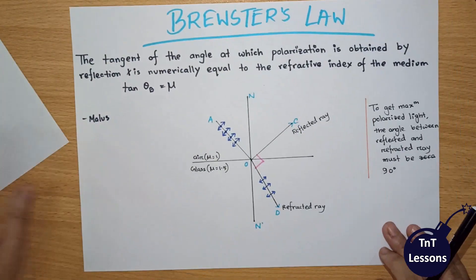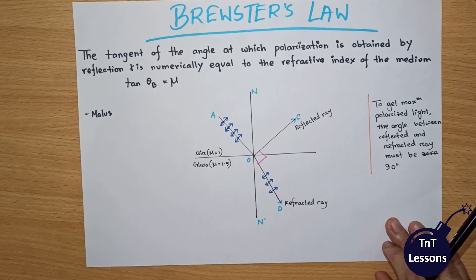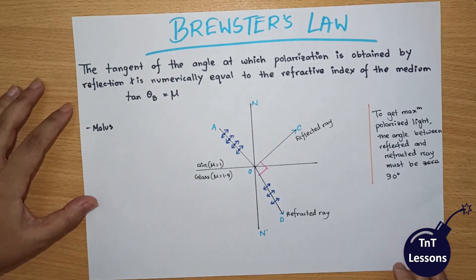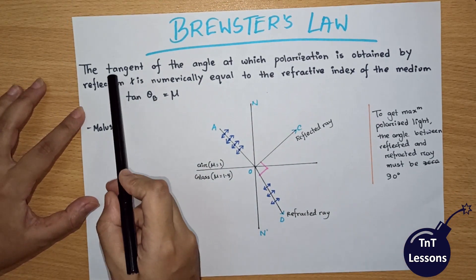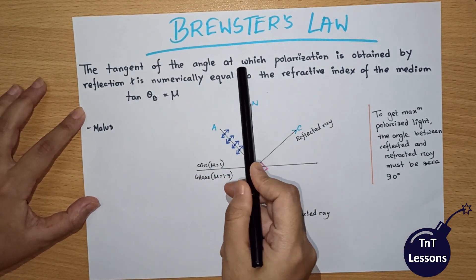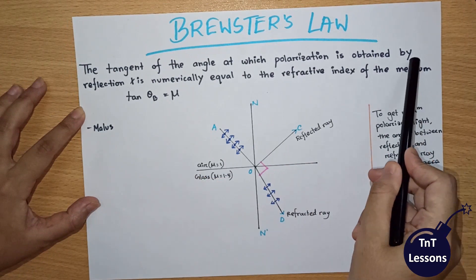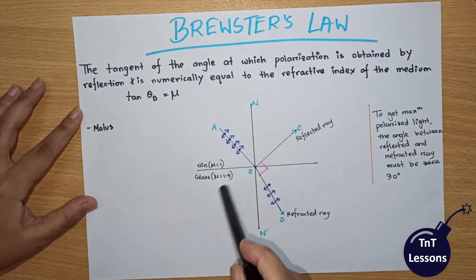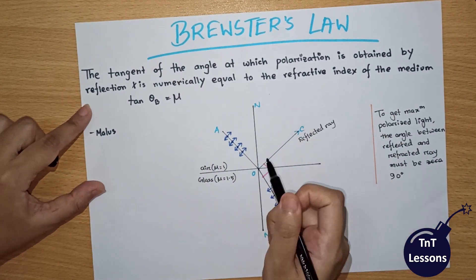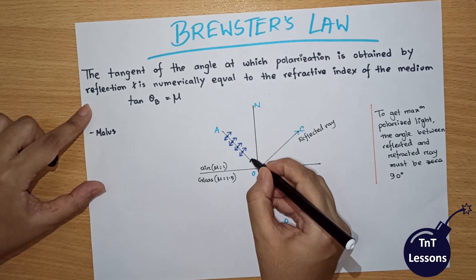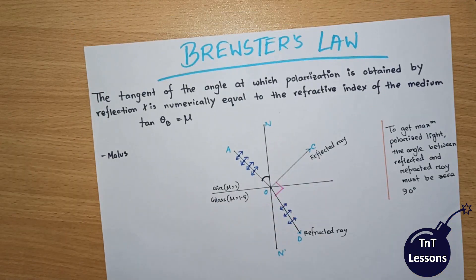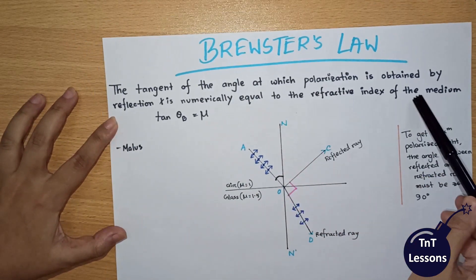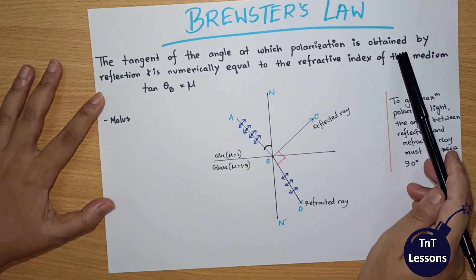We can place the tangent of the angle at which the polarization is obtained. This is numerically equal to the refractive index of the medium.